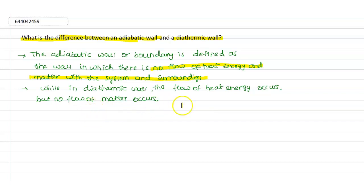the flow of heat energy occurs but no flow of matter occurs in this case. So the flow of heat energy can occur in this case, but no flow of matter occurs. So this is the main difference between adiabatic wall and a diathermic wall. A boundary made of a thermally conductive material is a diathermic wall.